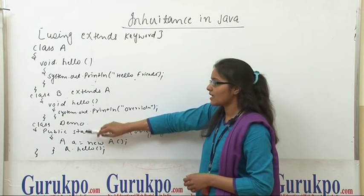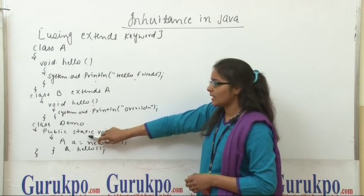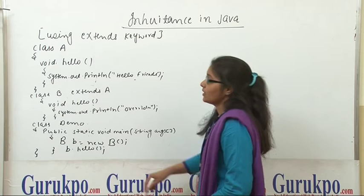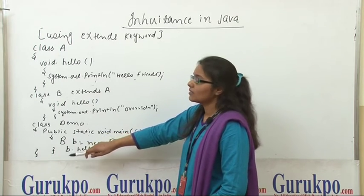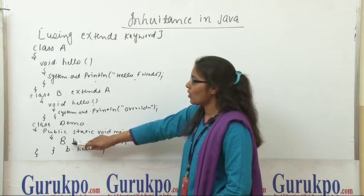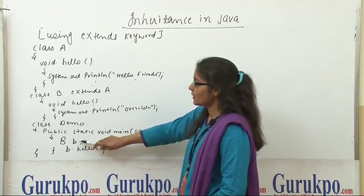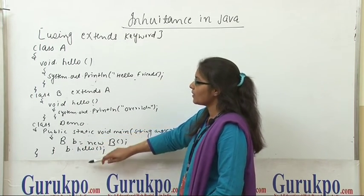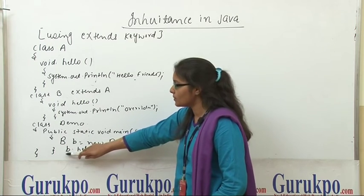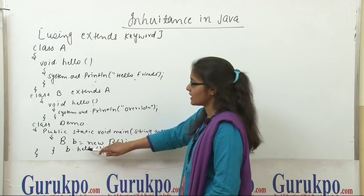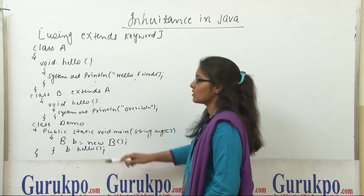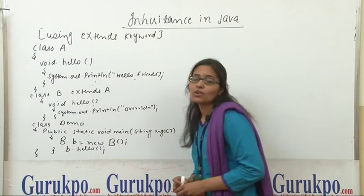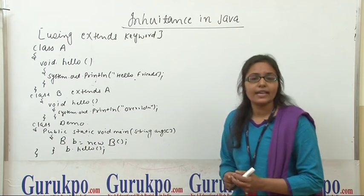Now, this is the main class. This is the main method. We have created the object of the subclass here and from this object, we are accessing the method of the subclass. So this was all about inheritance.